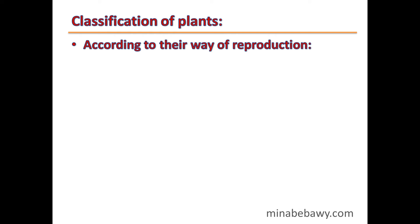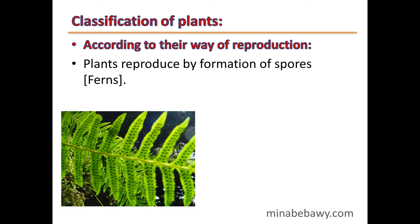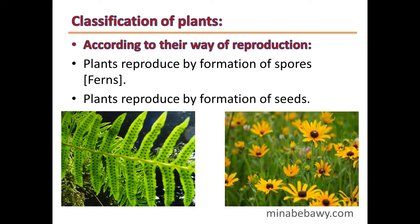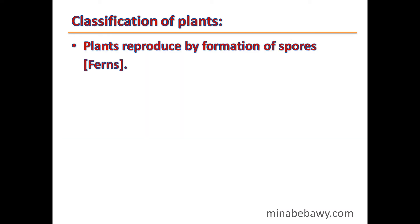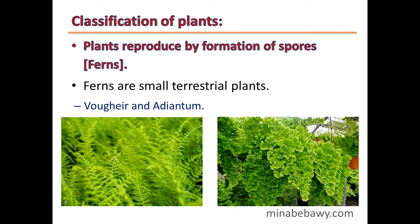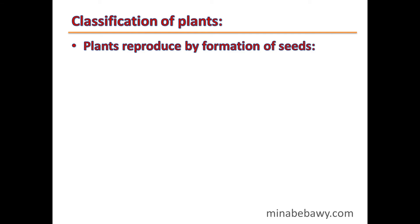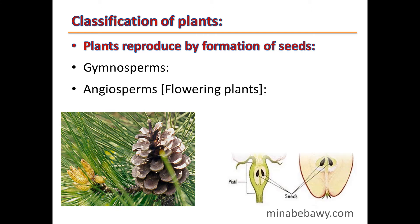The second classification is the classification of plants according to their way of reproduction. Plants reproduced by the formation of spores include ferns, which are small terrestrial plants such as bracken fern and adiantum. They reproduce by the formation of spores.